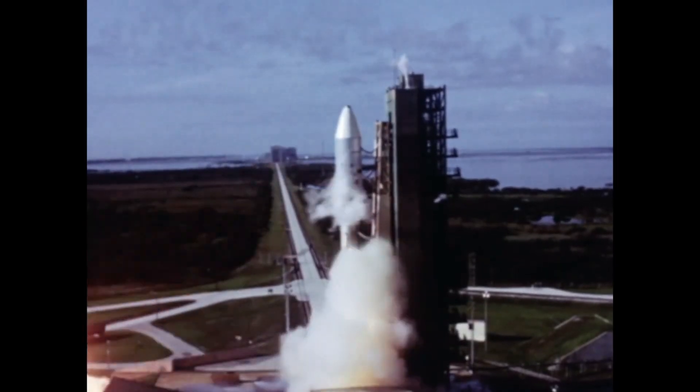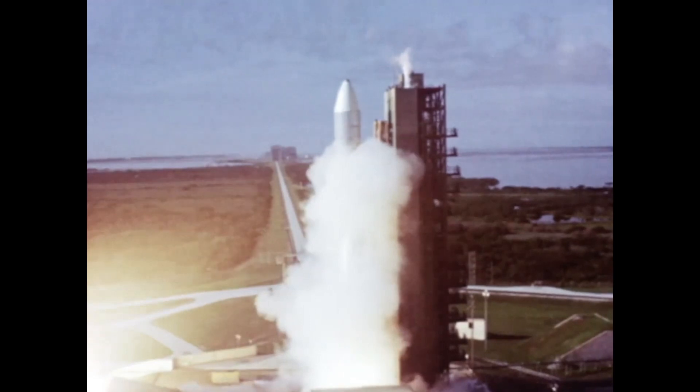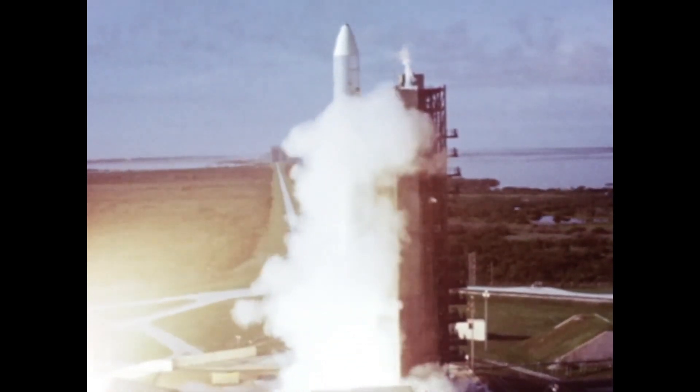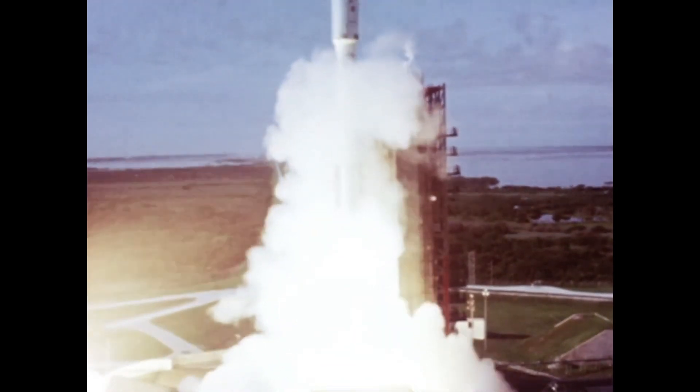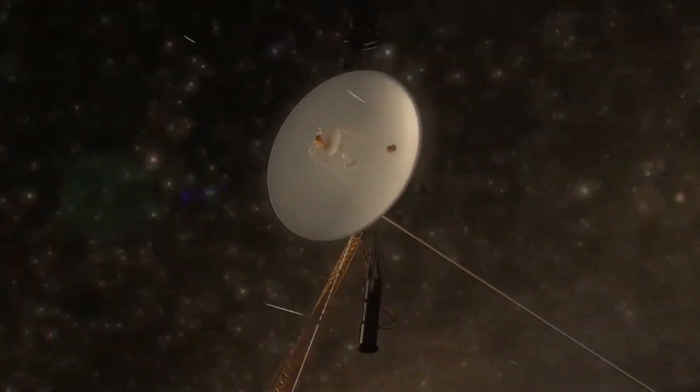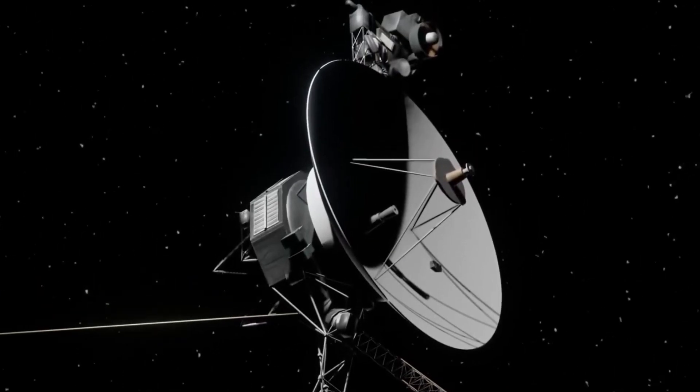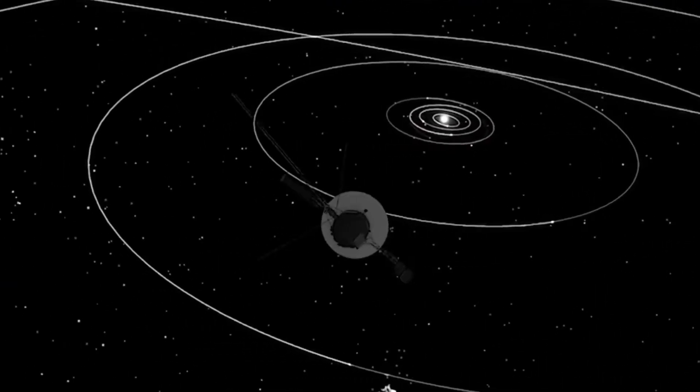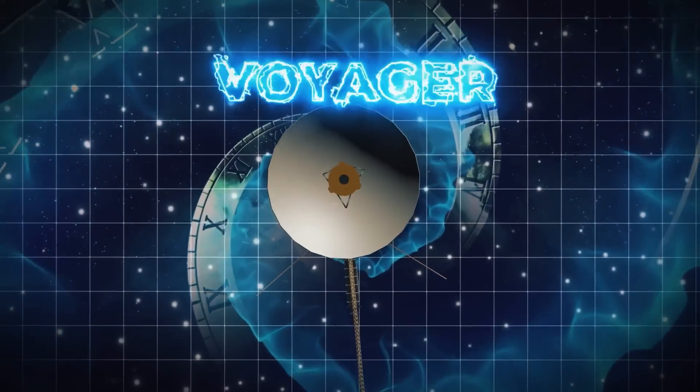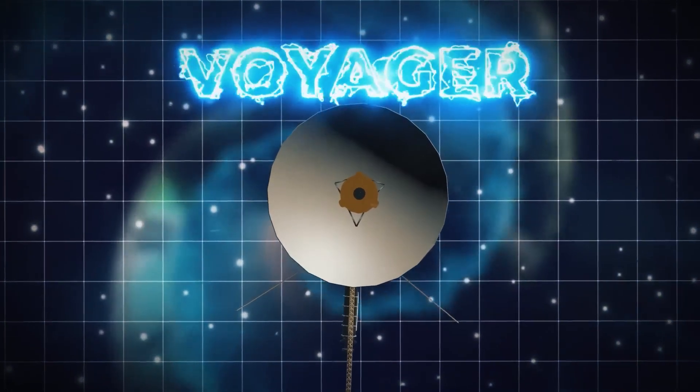Perhaps one of Voyager 1's most iconic achievements is the poignant pale blue dot image immortalized by Carl Sagan, which offers a humbling perspective of Earth as a tiny speck suspended in the vastness of space. This image serves as a powerful reminder of humanity's place in the universe and the interconnectedness of all life on our planet.